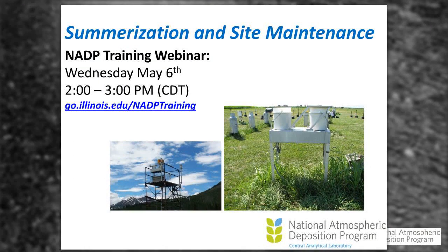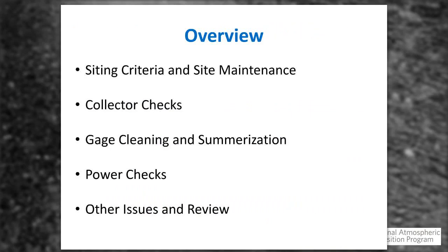The title of today's webinar is Summarization and Site Maintenance. Some of us look forward to the summarization part more than others. You're south of the Mason-Dixon line — I know you had a lot of snow and ice in the Carolinas, Texas, and similar areas. During those torrential rains and ice and snow, the equipment does take a lot of abuse. Today we want to cover siting criteria and site maintenance, collector checks, gauge cleaning, summarization, power checks, and a review.